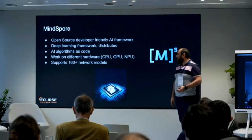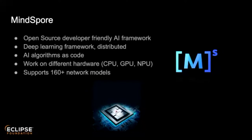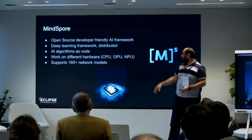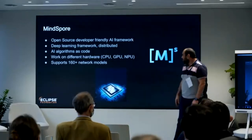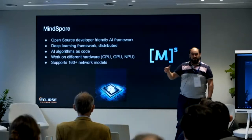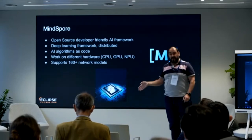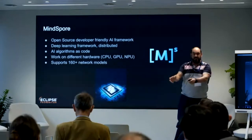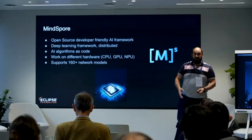MindSpore is an open-source, developer-friendly deep learning framework. The purpose is to have the model as code, with pre-trained models ready to use. Another key feature is that the same code can be executed on different devices and hardware — the same code is translated for CPU, GPU, or a specific processor. As of last week, there were more than 160 pre-trained models available in MindSpore.